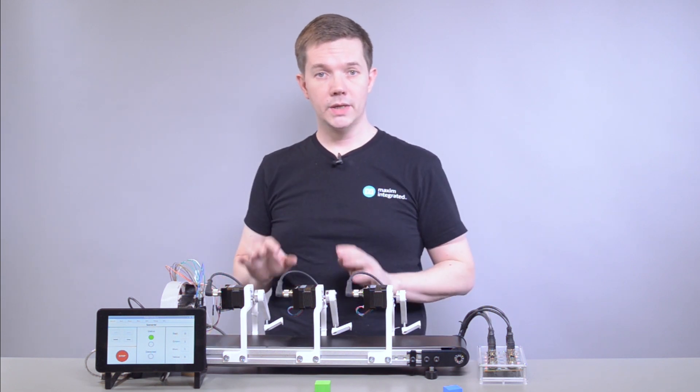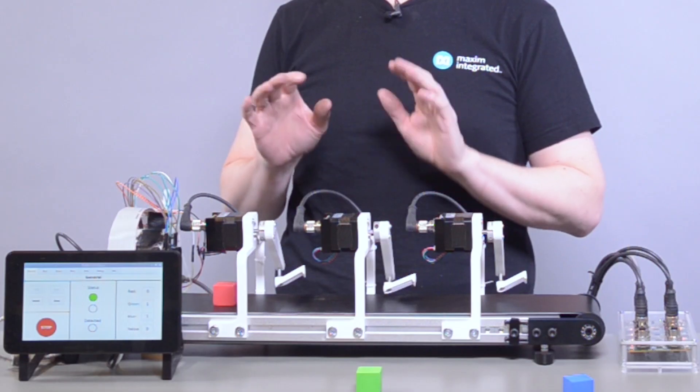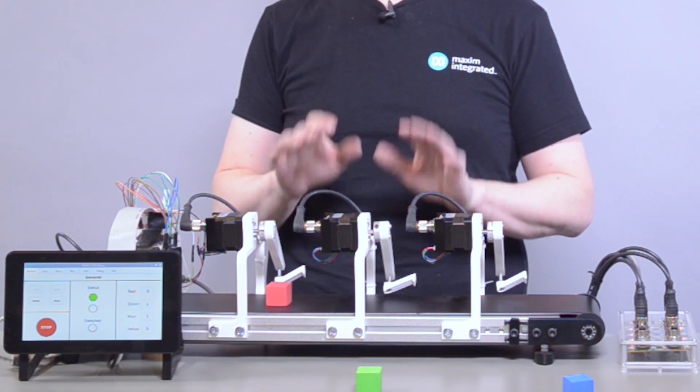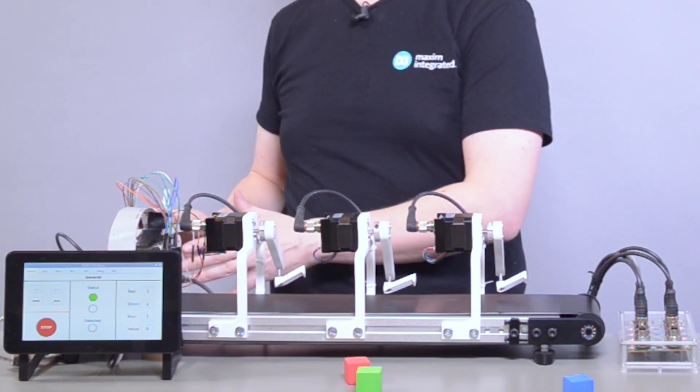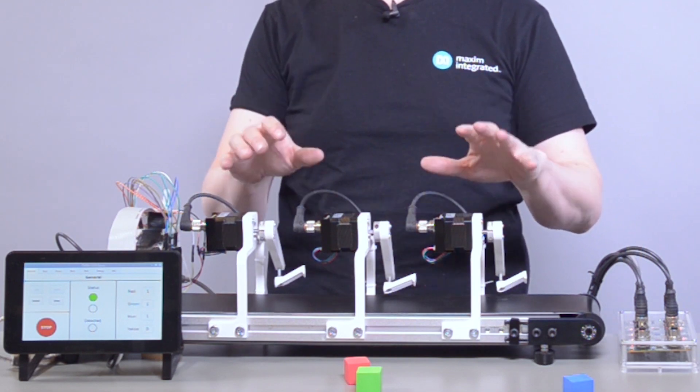In this demo we showcase a simplified color sorting application using four PD42-11243 IO-Link. One of them is driving the belt, the three visible ones sorting the cubes.